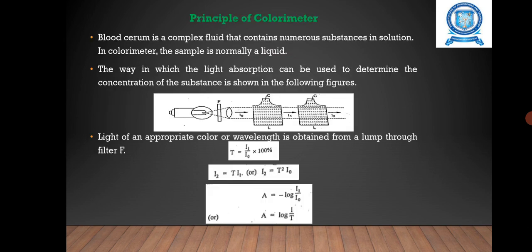The principle of colorimeter: blood serum is a complex fluid that contains numerous substances in solution. In colorimeter, the sample is normally a liquid. This principle states that chemical compounds in solution appear colored with the saturation of the color depending on the concentration of the compound. The way in which light absorption can be used to determine the concentration of the substance is shown in the following figure.